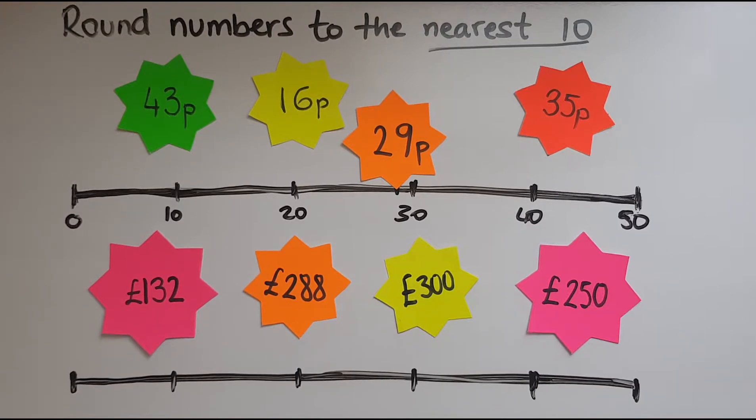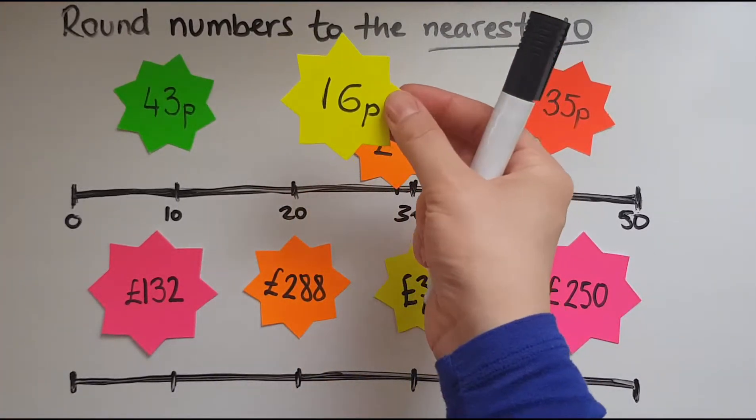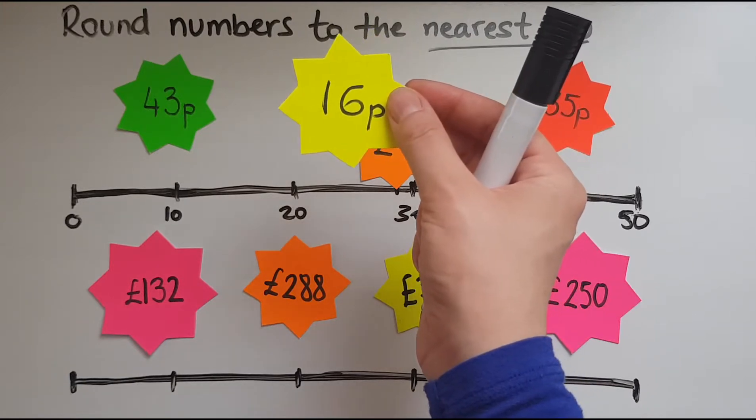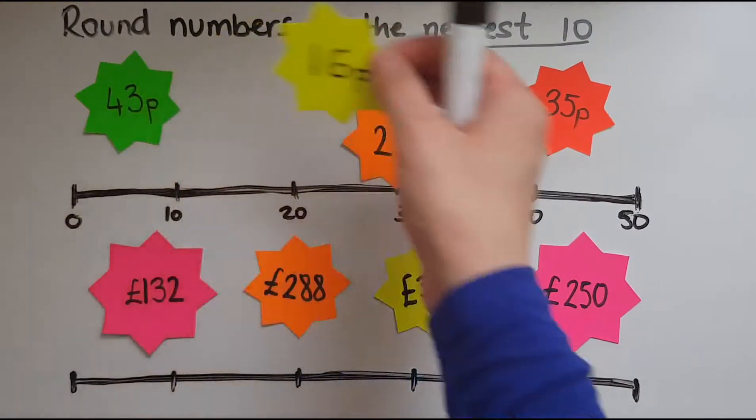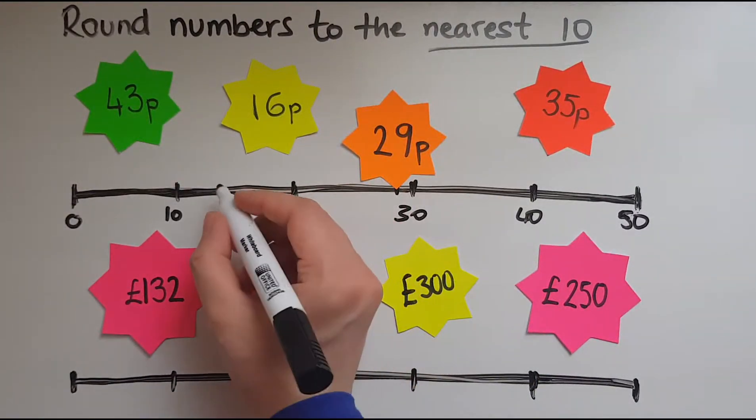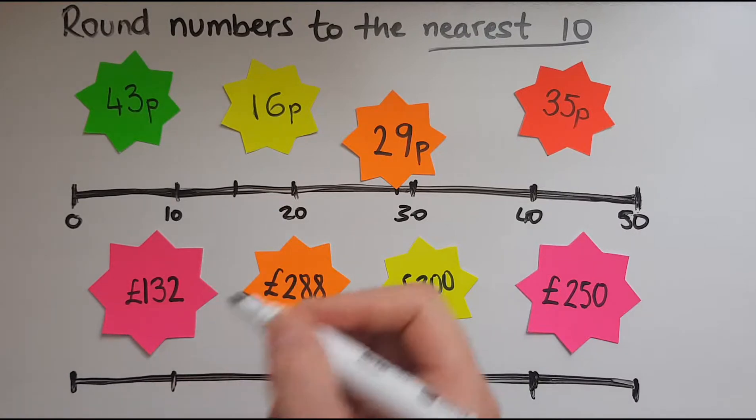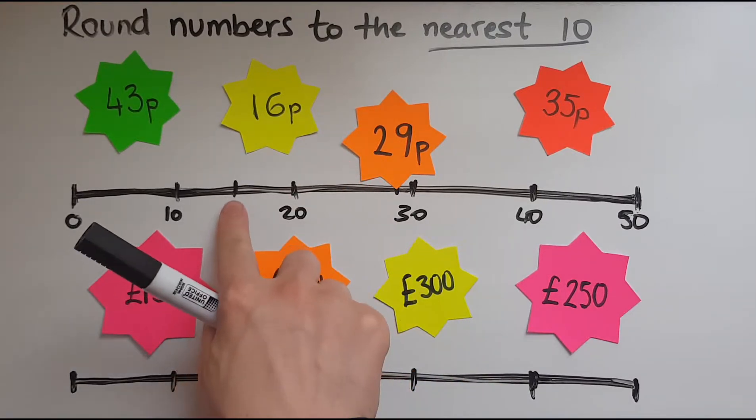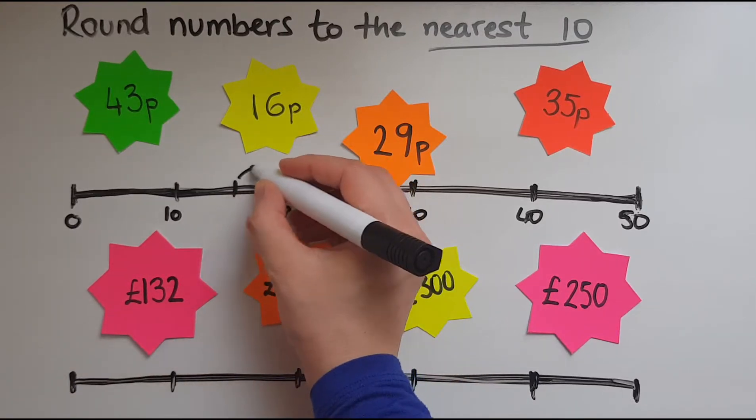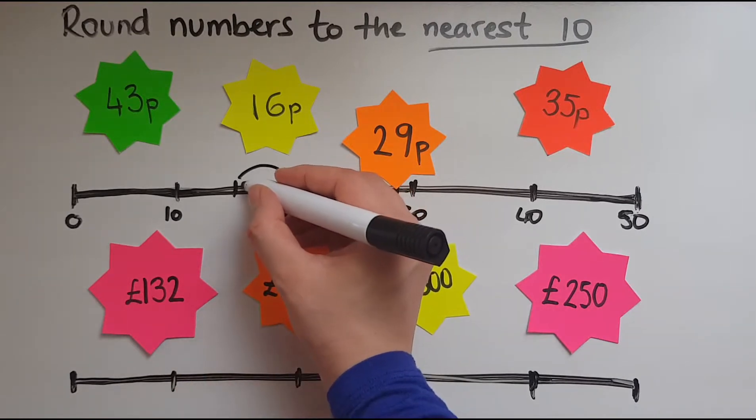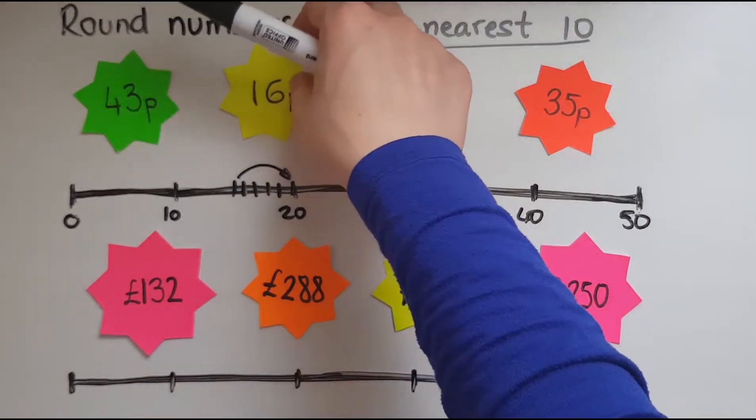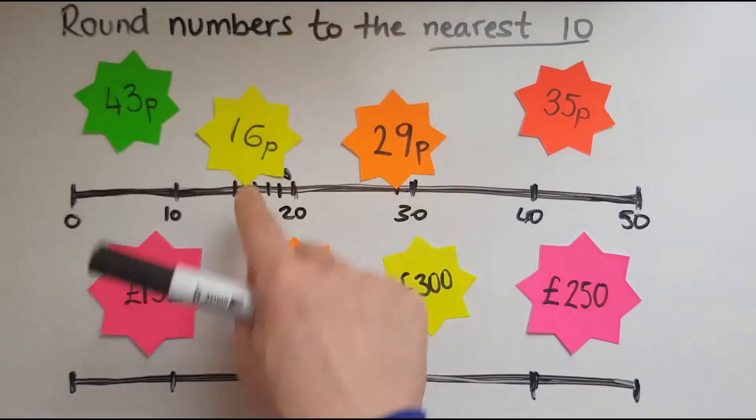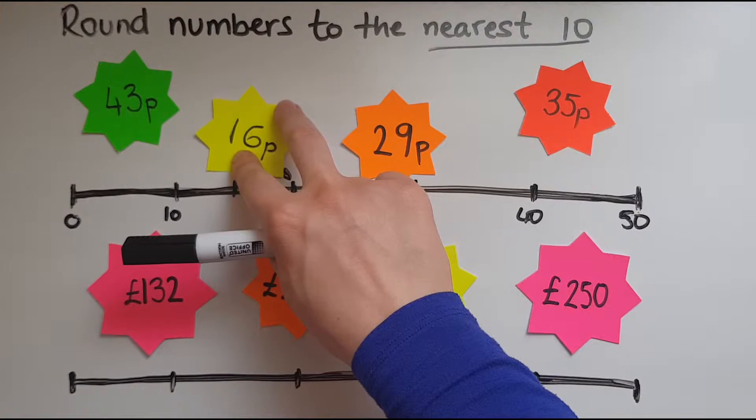So let's have a look at the other examples as well. We've got 16 pence so where does that fit? 16 pence stands between 10 and 20 because it's larger than 10 but it's smaller than 20. So there is 10 and that's 20 in the middle, right in the middle will be 15 and we said that 15 would be rounded up so that would go up to 20. So 16 which is placed right here is rounded to 20, 20 pence in this case.